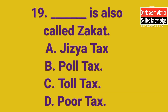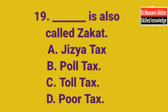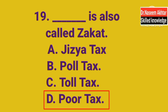MCQ 19: Dash is also called Zakat. کون سے tax کو Zakat کہا جاتا ہے؟ A. Jizya Tax, B. Poll Tax, C. Toul Tax, D. Poor Tax. The correct answer is D — Poor Tax is also called Zakat.